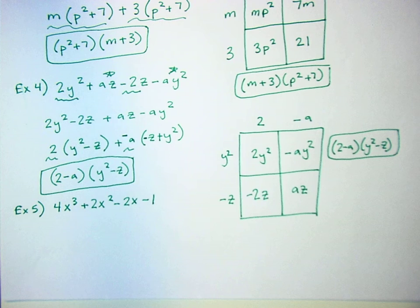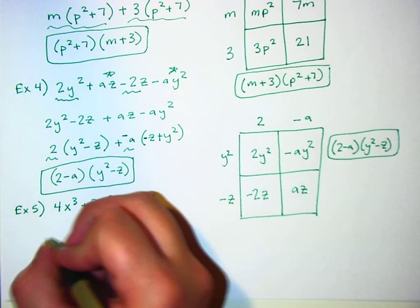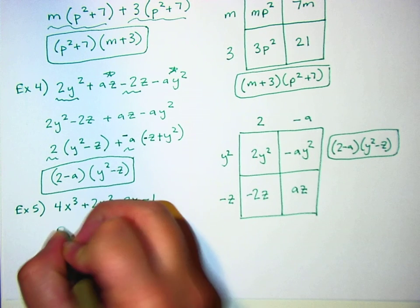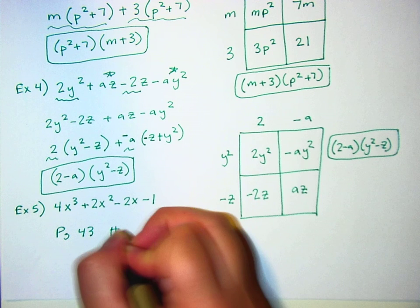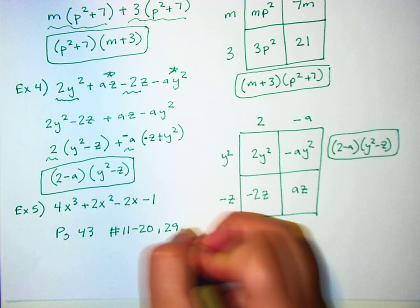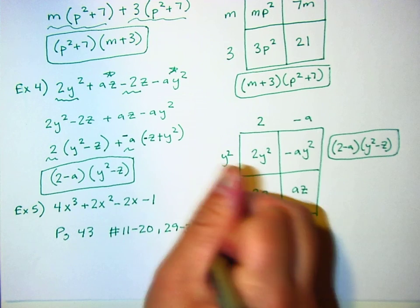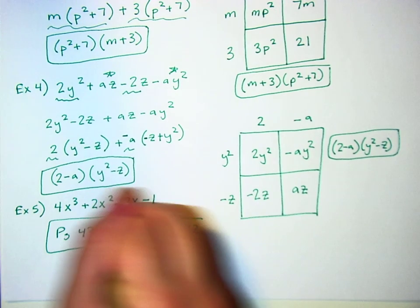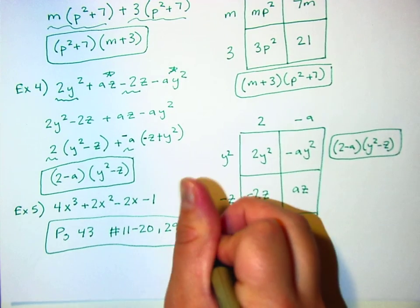All right. Your homework for the night is page 43, numbers 11 through 20 and 29 through 32. Pretty short assignment. But I think short is okay today.